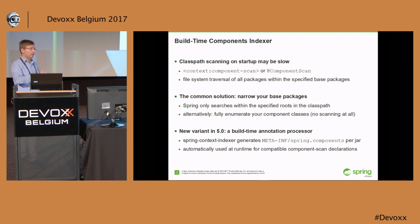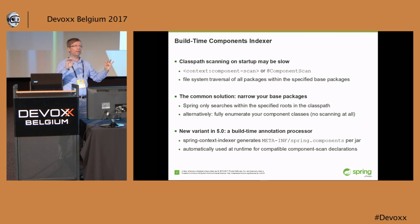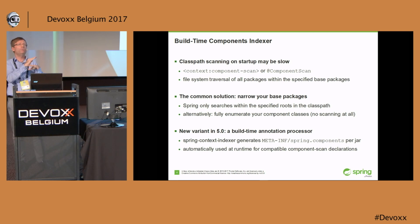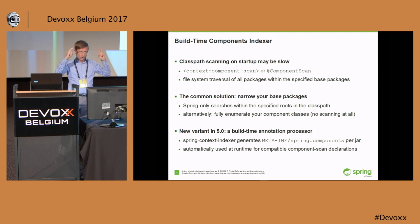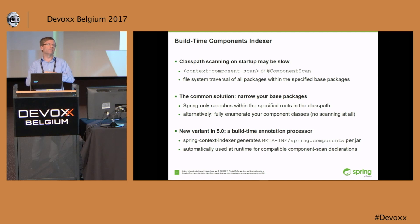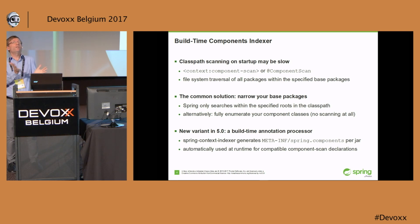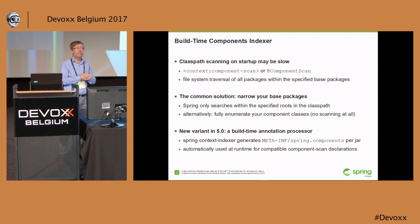Our usual recommendation: narrow your base packages. The whole point of the base packages mechanism in Spring is to be as specific as you can about where you want your components to be found, where we should look for them, and where we can skip the entire search because there are no components there anyway. You can search from the root package downwards by not specifying a base package, but that's not recommended. People still do it, so we recognize there is an alternative improvement we can provide, and that's what we're doing in 5.0.